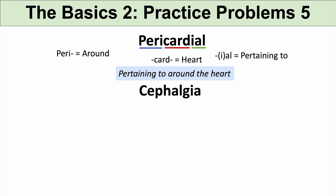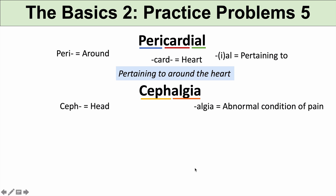The next word is cephalgia. Ceph or cephalo means the head. The suffix algia means abnormal condition of pain — you can see ia meaning abnormal condition within it. So when we put this together, cephalgia is an abnormal condition of pain of the head, which is a headache.